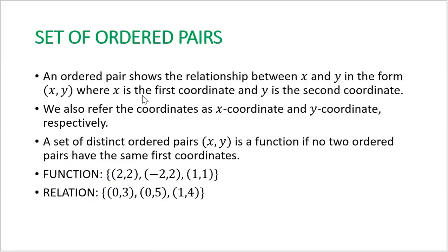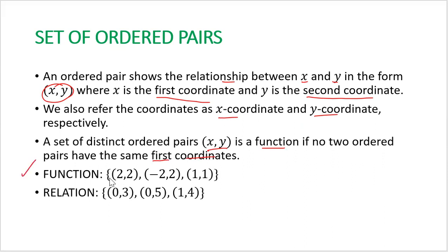For a set of ordered pairs, an ordered pair shows the relationship between x and y in the form (x, y), where x is the first coordinate and y is the second coordinate. A set of distinct ordered pairs is a function if no two ordered pairs have the same first coordinate. For example, if the x-coordinates are all different, the relation is a function. However, if two ordered pairs share the same x-coordinate, it is just a relation.